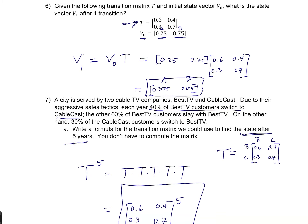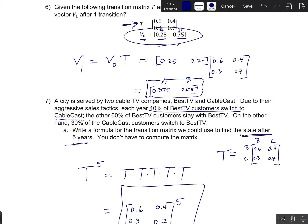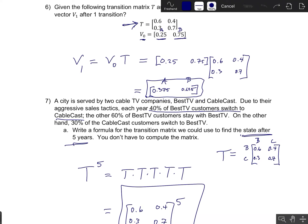Going back to example 6: state vectors can represent either the proportion of customers at each company or the probability of being in each state. Multiplying by a transition matrix always gives a new state vector, and any state vector's entries must sum to one. This gives you a good way of checking your answers — if you compute a new state vector and its entries don't add up to one, something has gone wrong.